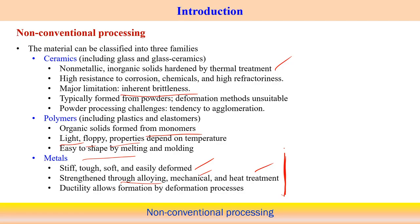Metals can be strengthened with alloying, work hardening, or strain hardening, and strength can be increased or optimized using heat treatment. Ductility allows formation by deformation processes because metals have a certain amount of ductility, which allows application of manufacturing processes related to mechanical deformation. For ceramics, we do not use processes involving deformation because ceramic processing starts from raw material in the form of powder.